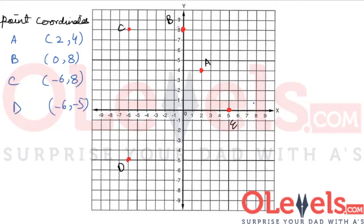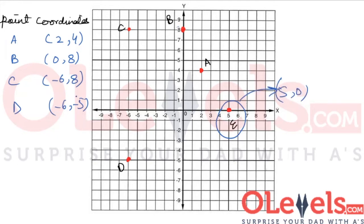Now let's try to find the coordinates of point E. We can observe that point E actually lies on the x-axis itself. The x value of point E is 5 and the y value is 0. So the coordinates of point E are (5, 0).